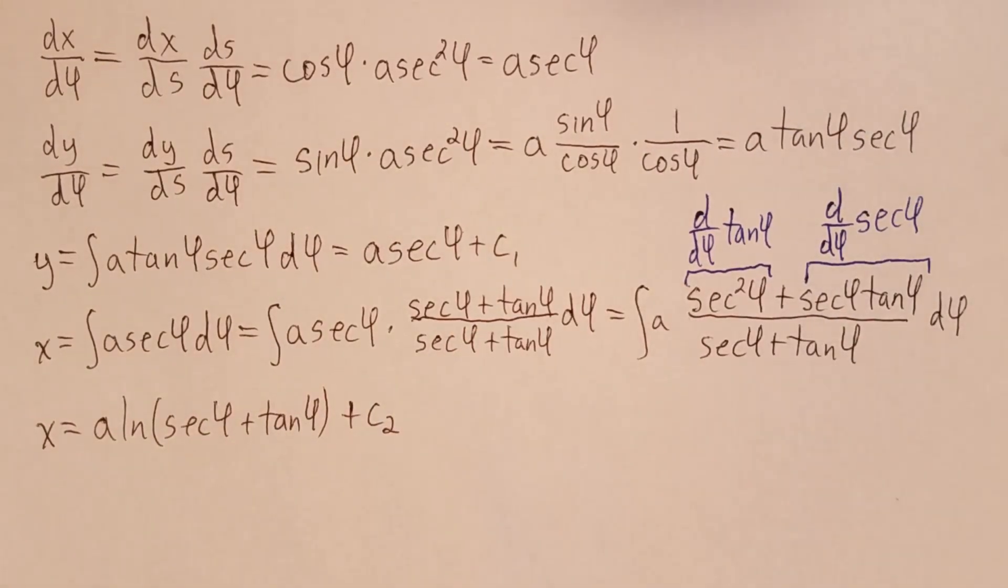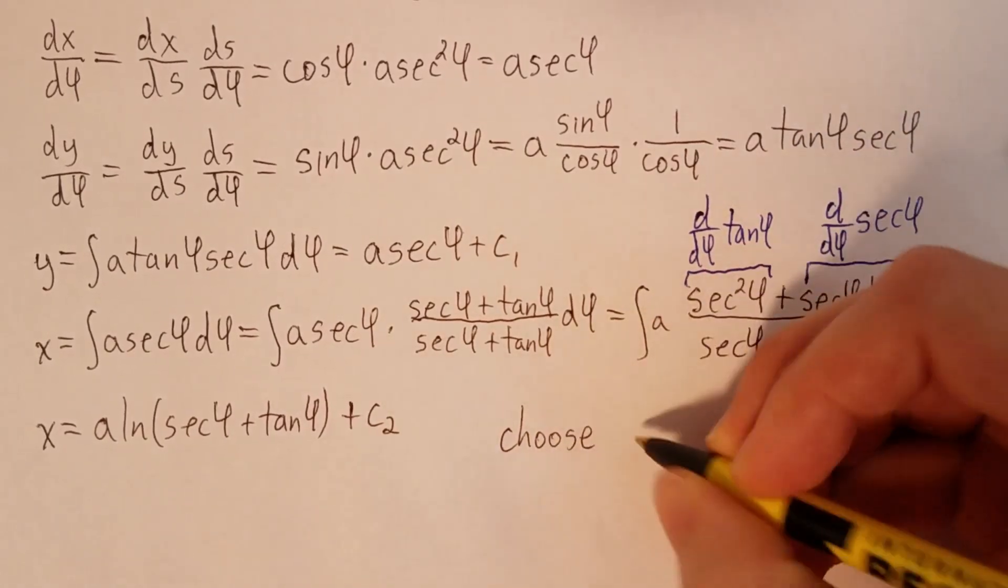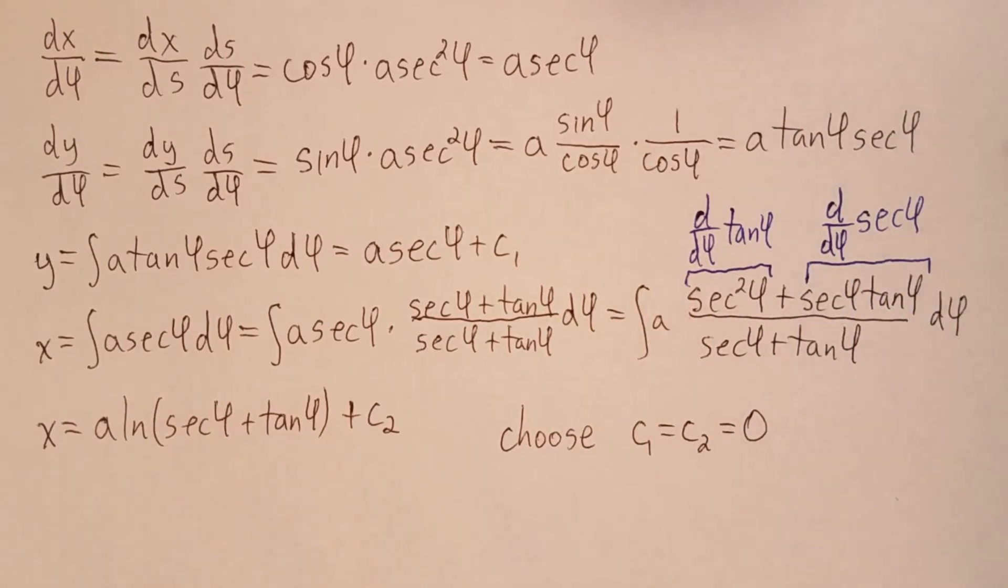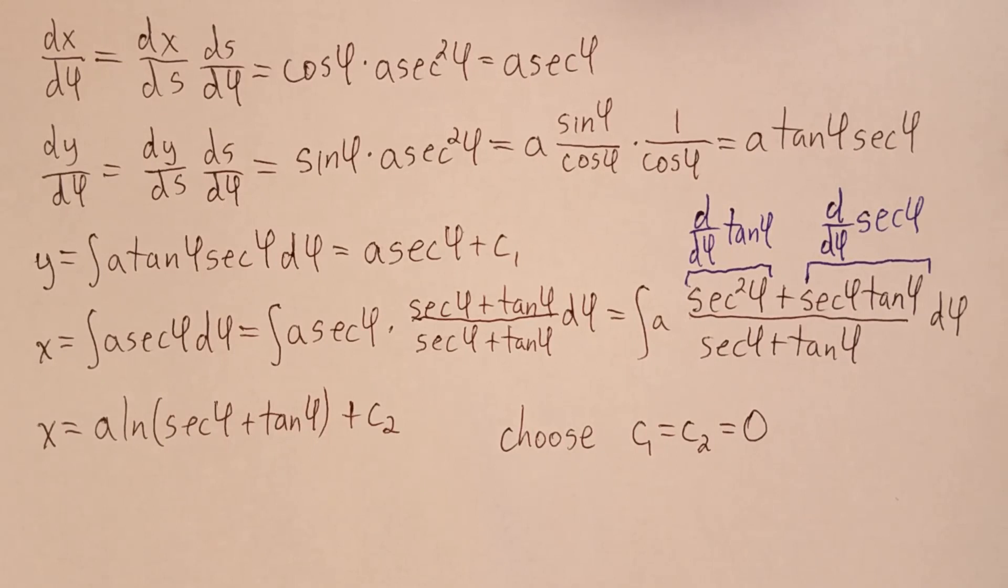So what do c1 and c2 represent? They actually correspond to changing where the origin is located. And since we didn't define the origin yet, we can just set them both equal to zero without loss of generality. This will simplify the calculations, and the result will still describe the catenary that we want.